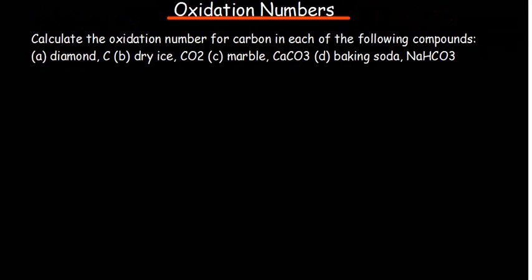So what is an oxidation number? An oxidation state, also known as an oxidation number, can be defined as the number of electrons that can either be gained or lost for a chemical bond to be formed. That is basically what an oxidation number or oxidation state is.